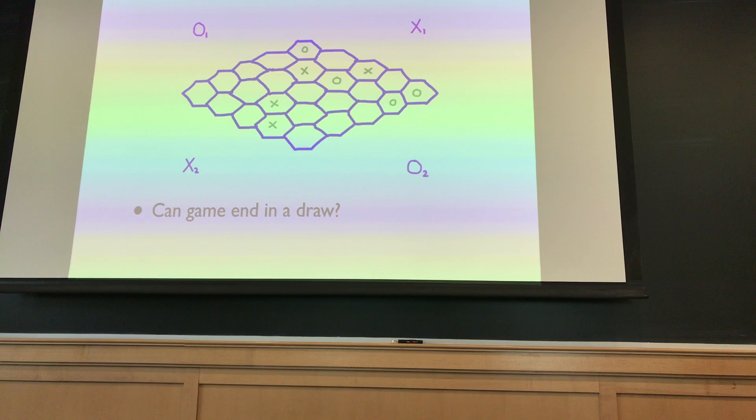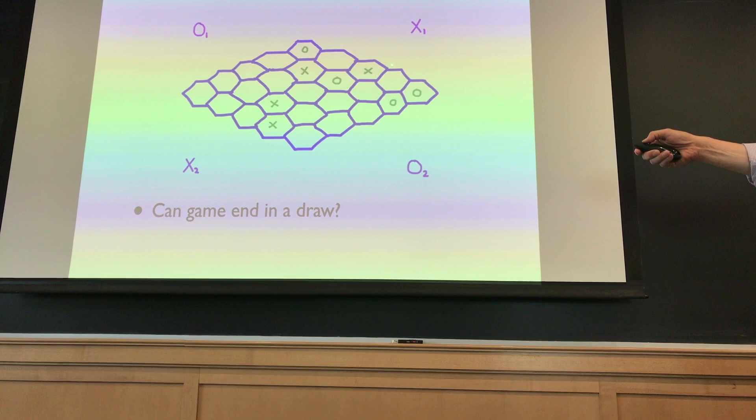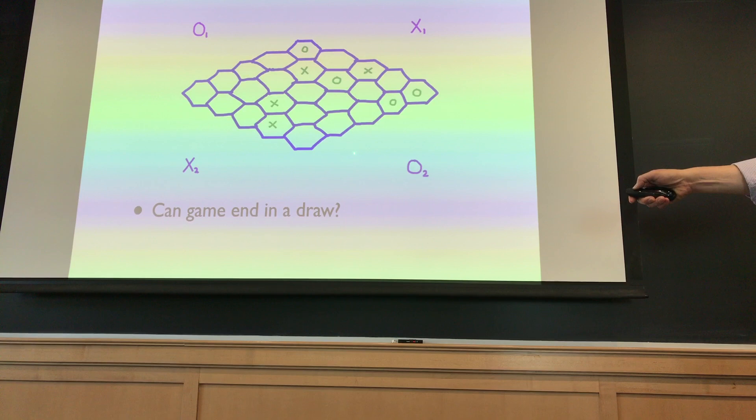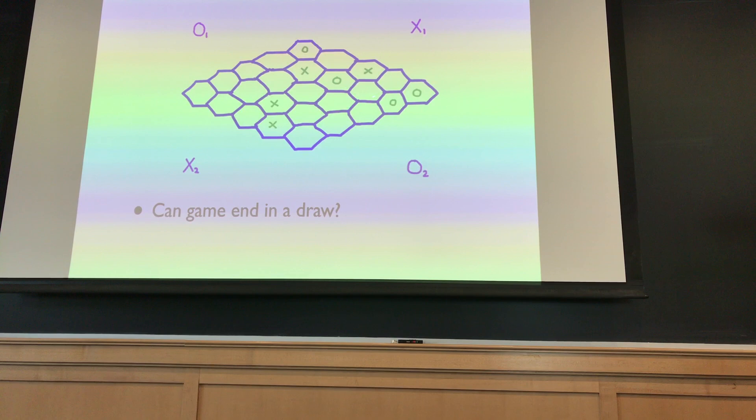Hex was studied by John Nash, who we'll say more about. One of the first questions you might ask when you start playing this game is: must the game always have a winner? Is it possible, through some combination of X's and O's, to end in a draw — where there's no chain from the X side to the X side or the O side to the O side?